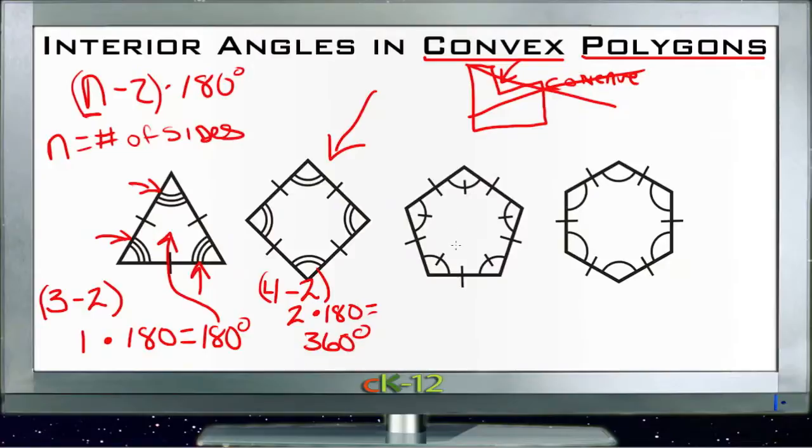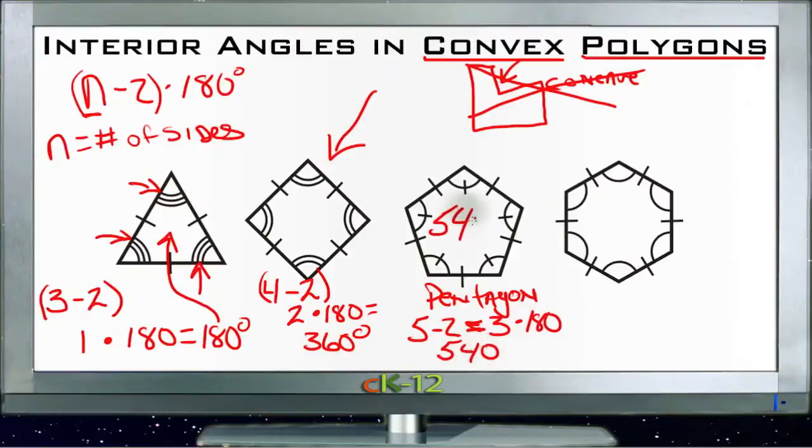This is a pentagon. A pentagon is five sides, so we'd have five minus two, which is three, and then three times 180 is 540. So a pentagon is 540 degrees.